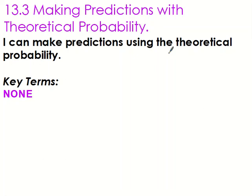13.3: Making predictions with theoretical probability. We're going to make predictions using the theoretical probability. This is just like when we did experimental probability and making inferences with surveys, so there are no new key terms.